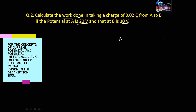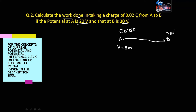Here the question is saying: there is a point A and another point B. A charge of 0.02 coulomb is to be moved from point A to point B. The potential at point A is 20 volt and the potential at point B is 30 volt. We have to find out what will be the work done.